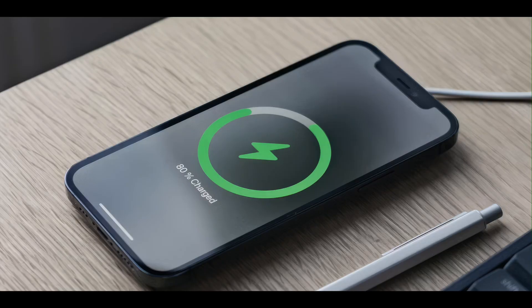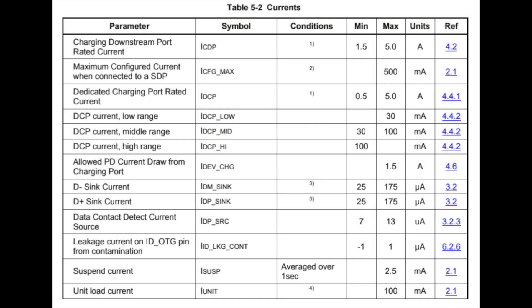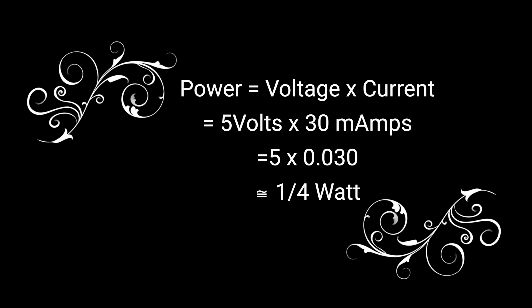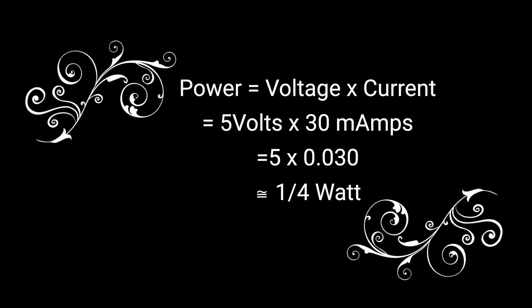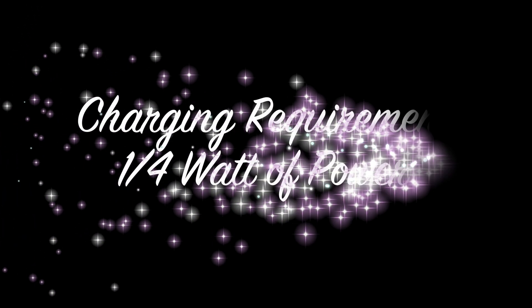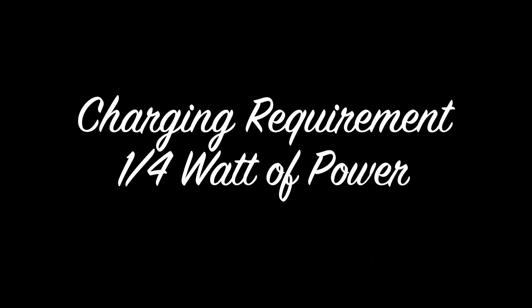First, how much power does your mobile phone need in order to charge? The nominal voltage level for a simple USB charging cable is 5 volts DC. The minimum USB charging current at 5 volts is 30 milliamps. And back to your high school classes, we know that power in watts equals voltage times current. So in this case, the power equals 5 volts times 30 milliamps, or about a quarter of a watt. So we need at least a quarter watt of power to charge a phone.